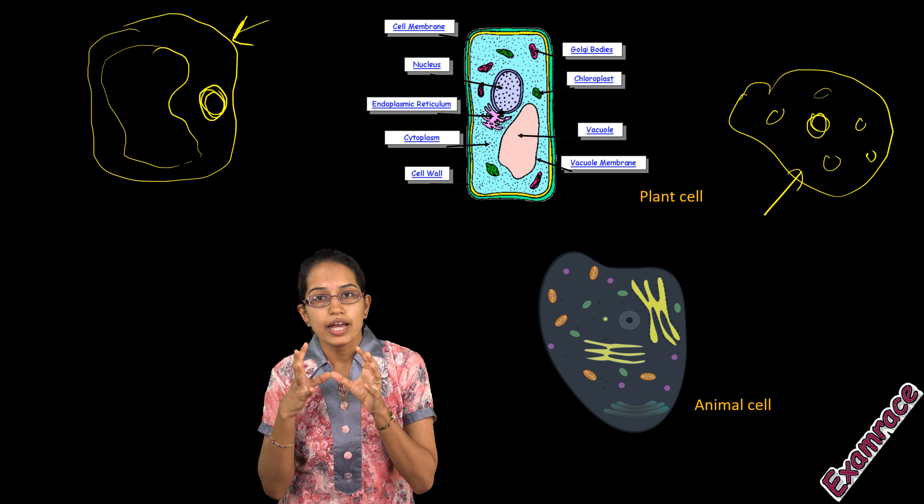In plant cells, starch is the storage material, whereas in animal cells, glycogen is the storage. Plants can synthesize their nutrients by themselves, but animal cells cannot. The number of mitochondria present in plant cells is less compared to animal cells. Lysosomes are rarely noticed in plant cells, but they are seen in animal cells and are also called suicidal bags. Those are some of the important differences between plant cells and animal cells. Stay tuned for further lectures on the important components of the cell.